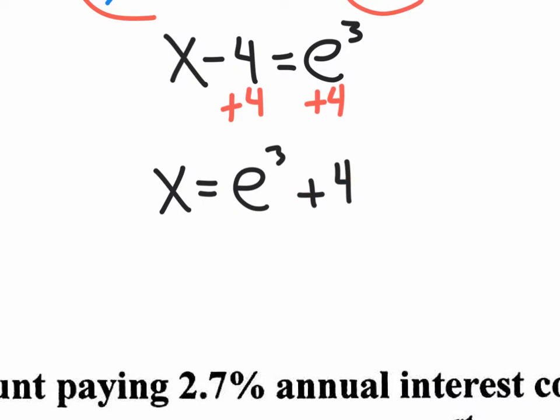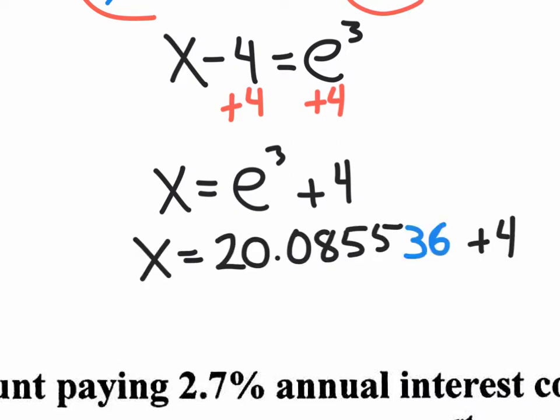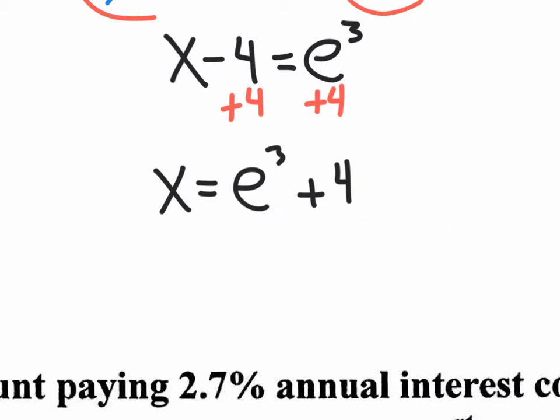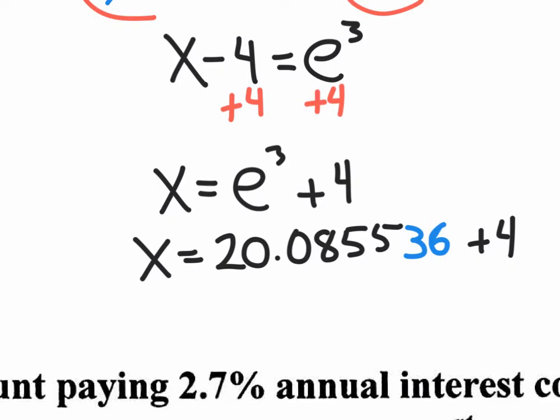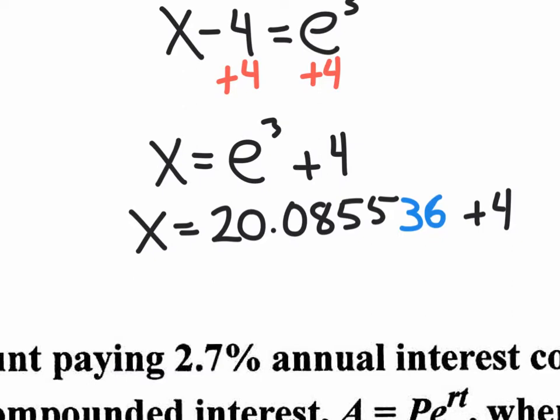On the calculator, type in second LN or shift LN — that gives you the e button with the space for your exponent. Type in the number three in that space, so you have e to the third, hit equal, and you get a decimal. If you do e to the third correctly, your final answer is 24.0855. The three doesn't change the five, so four decimal places gives 24.0855. We're done.